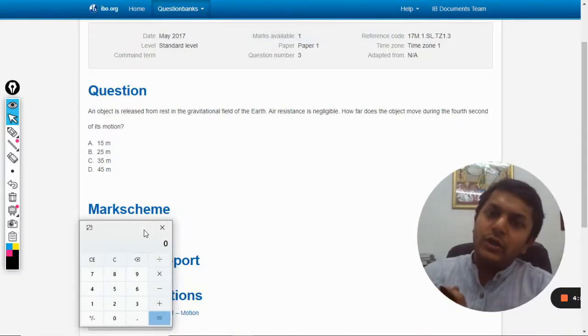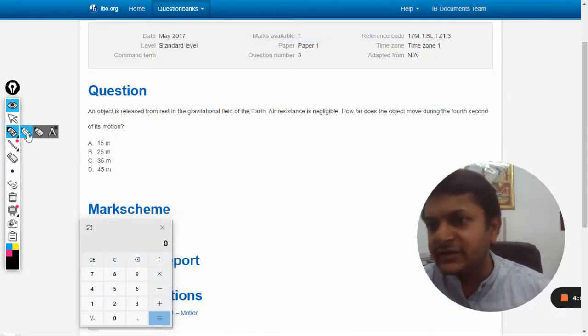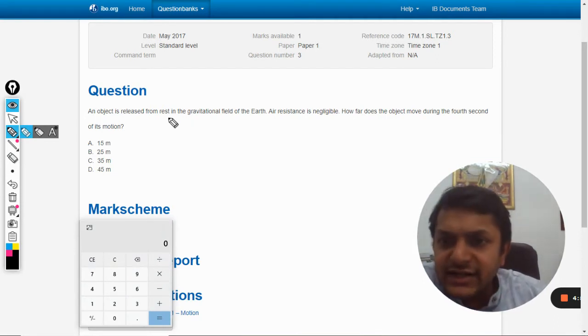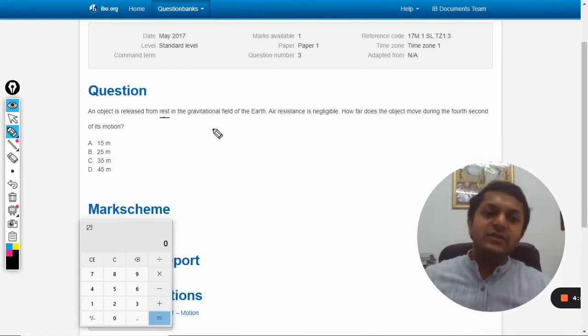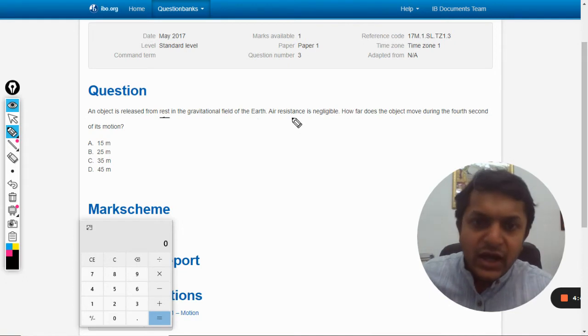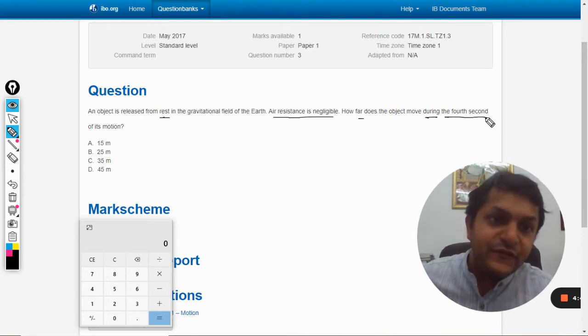Hello dear students, how are you all? In this question, an object is released from rest in the gravitational field of the Earth. Air resistance is negligible. How far does the object move during the fourth second of its motion?